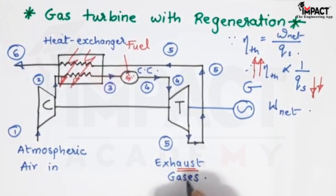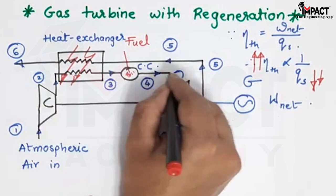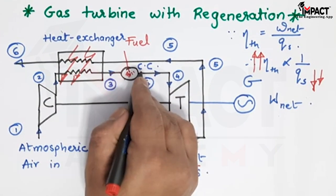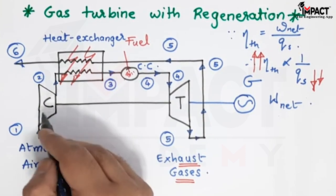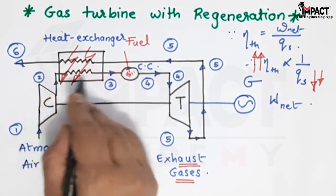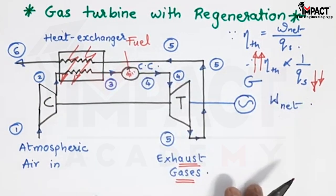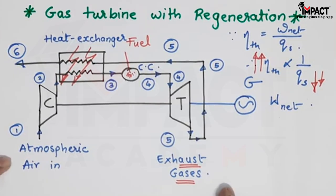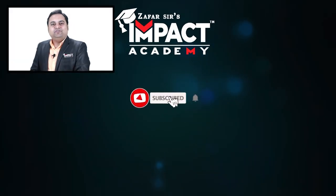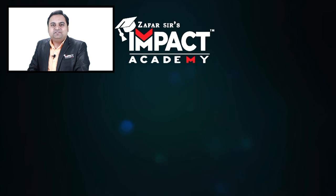The exhaust gases are coming back and heating the air going into the combustion chamber — that is why this is called the regeneration method, where we utilize the heat of the exhaust gases to heat the incoming air going into the combustion chamber. In this way the fuel supply goes on reducing and thermal efficiency increases. So in short, that was a description of the gas turbine with regeneration. If you find my videos helpful, please like, share, comment, and subscribe to our channel and share it among your family and friends. Thanks for watching.